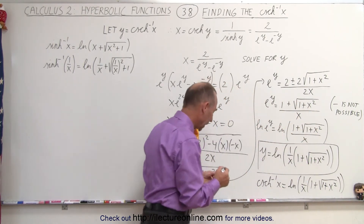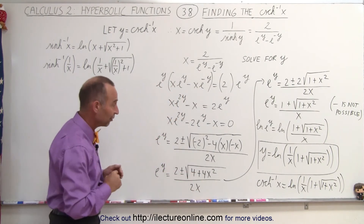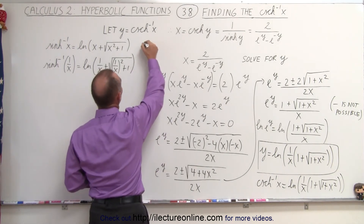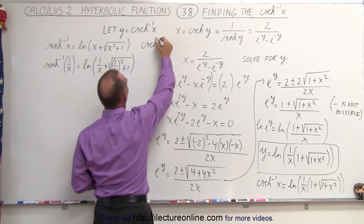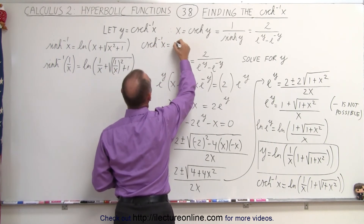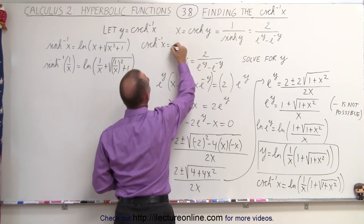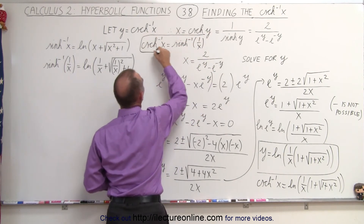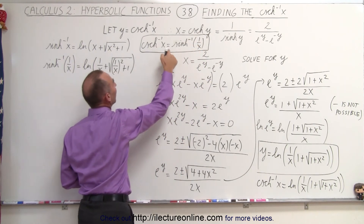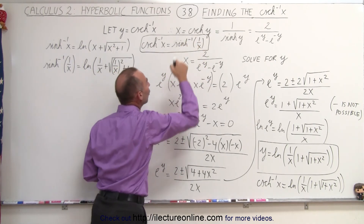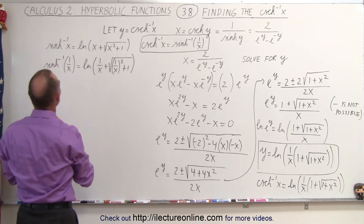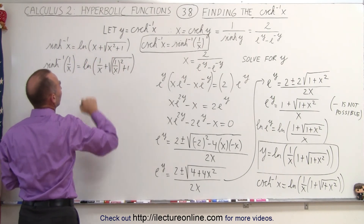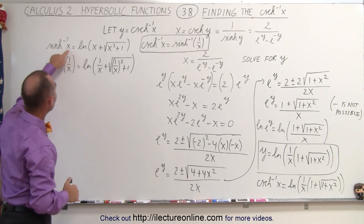Now it turns out we can also write it as follows: the inverse hyperbolic cosecant of x is also equal to the inverse hyperbolic sine of 1 over x. Sometimes they will write the inverse hyperbolic cosecant of x as the inverse hyperbolic sine of 1 over x. We recall that the inverse hyperbolic sine of x equals the natural log of x plus the square root of x squared plus 1, and now we're going to replace every x by 1 over x.